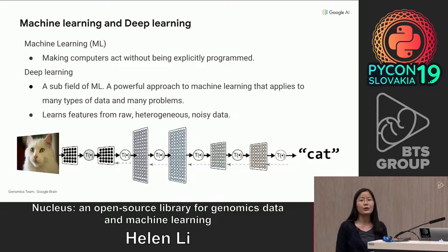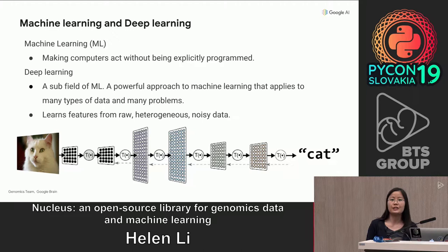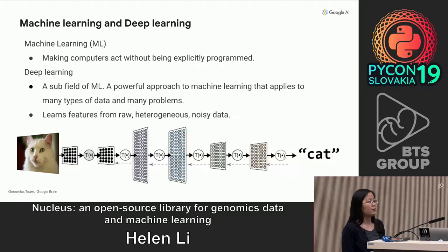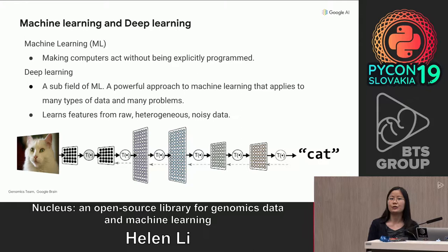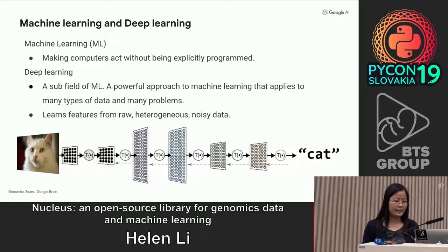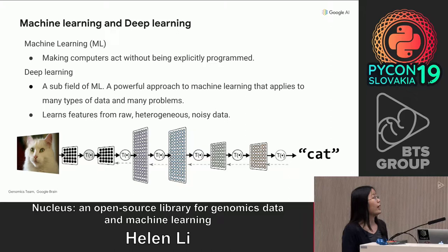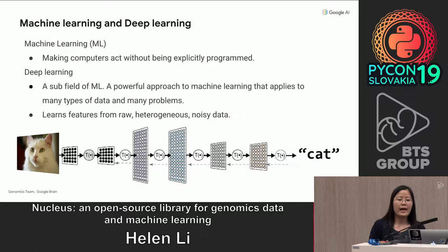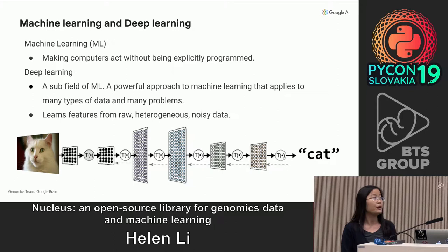Machine learning is the science of making computers act without being explicitly programmed. A subfield of machine learning is called deep learning. It is not a new concept, but it's getting a lot of attention these days. It's a modern reincarnation of artificial neural networks, which has been around for quite some time. Deep learning consists of layers of mathematical trainable units, also called neurons, that were loosely inspired by the brain. Deep learning can learn features from very noisy data, and its power has been applied to many different problems.